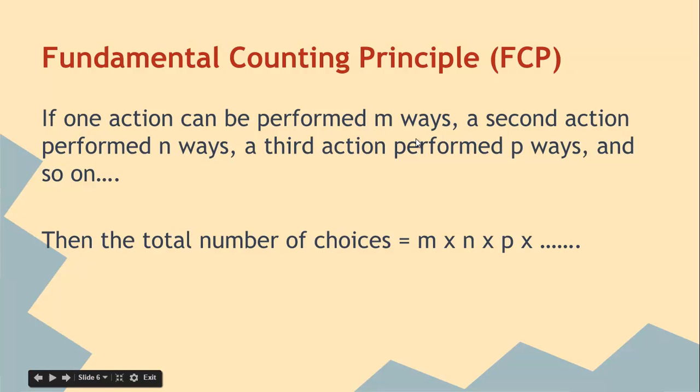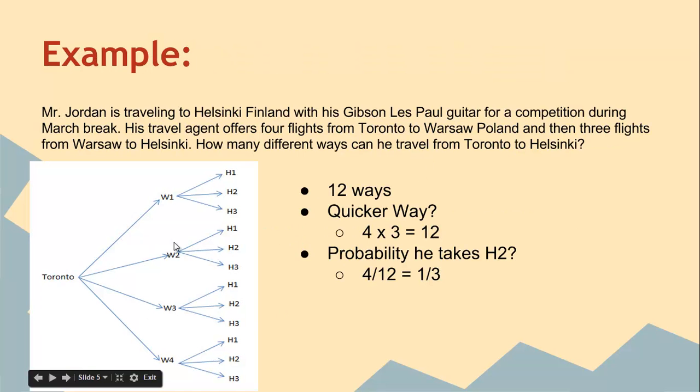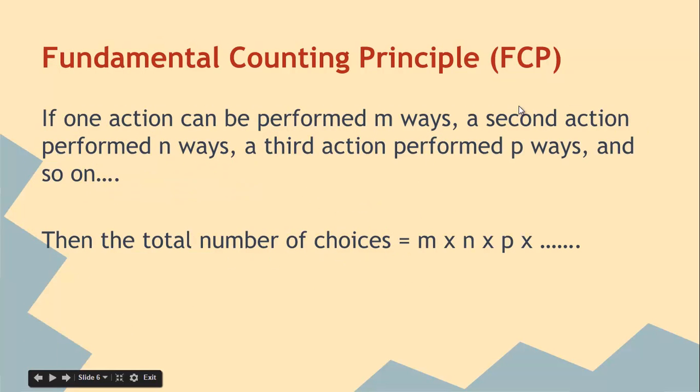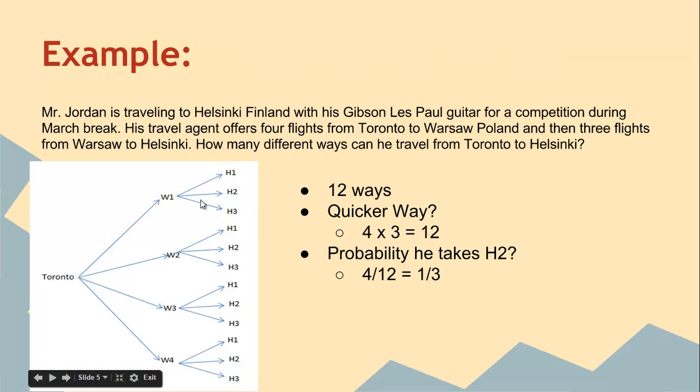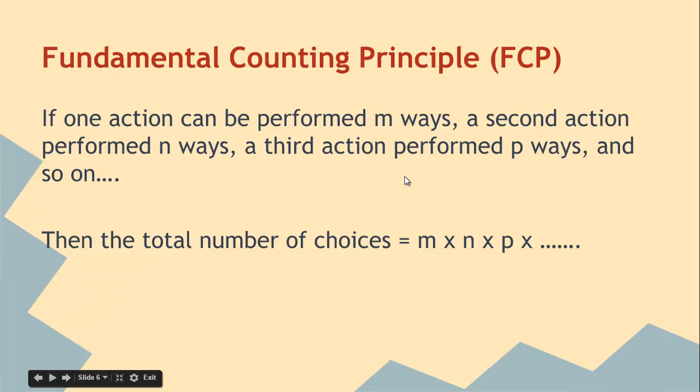So if one action can be formed M ways, so Toronto to Warsaw is four ways, and a second action is N ways, so Warsaw to Helsinki is three ways, and then say there's another flight that could be formed P ways, and so on, then the total number of choice is M times N times P, and that's shown in a tree diagram, and that's what we call the fundamental counting principle. And think about counting as multiplication, that multiplication is a way to count more efficiently.